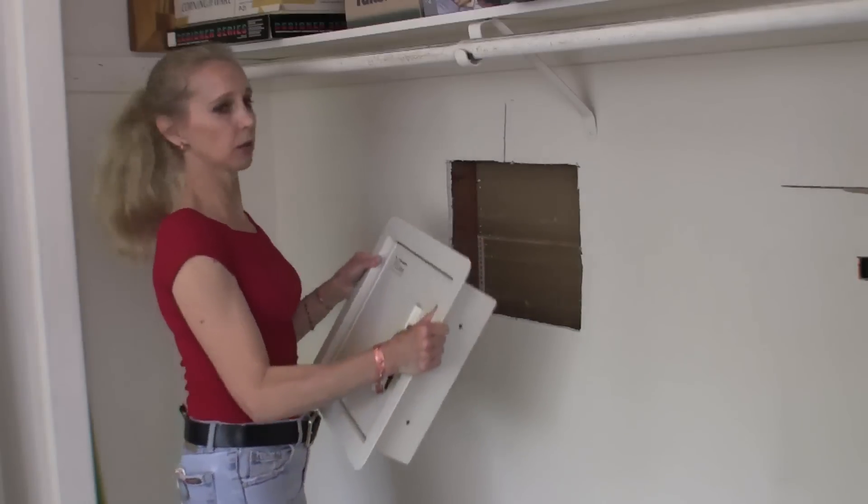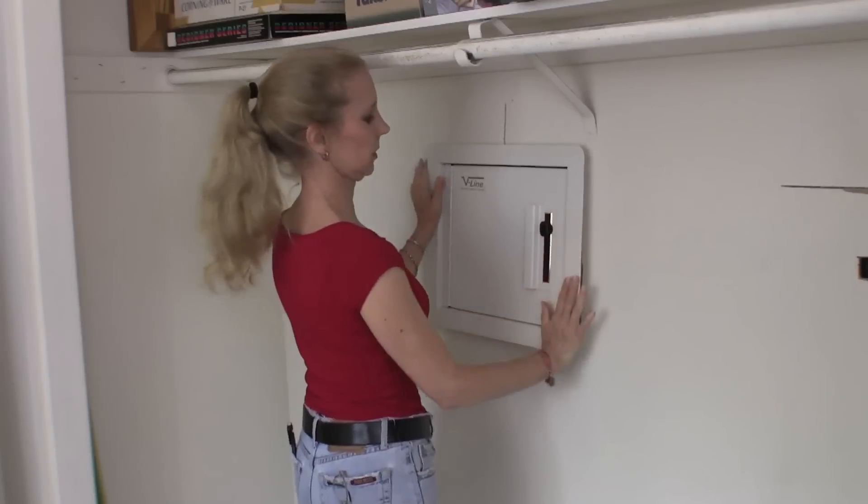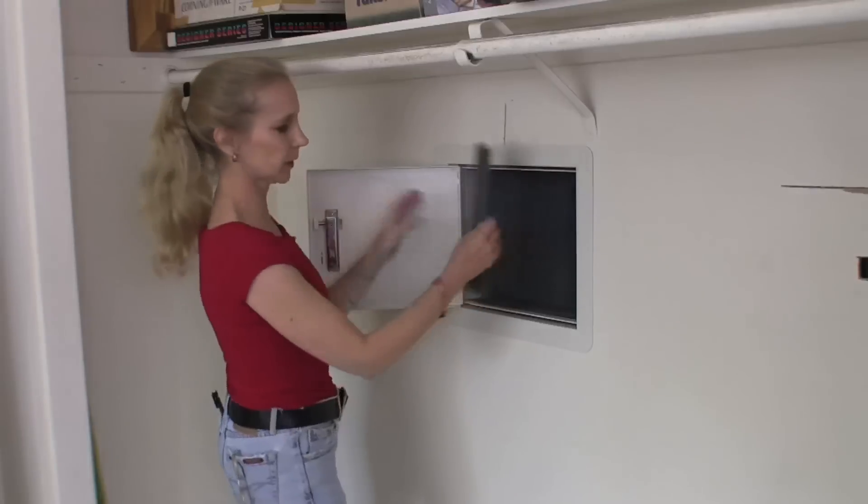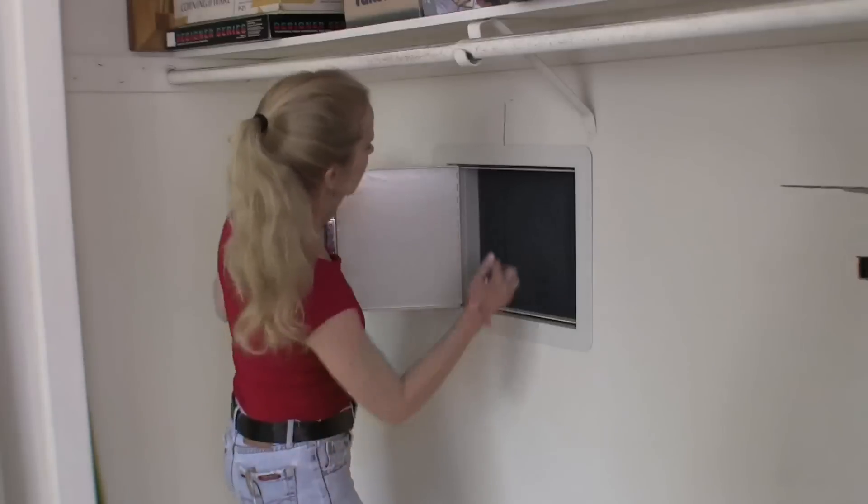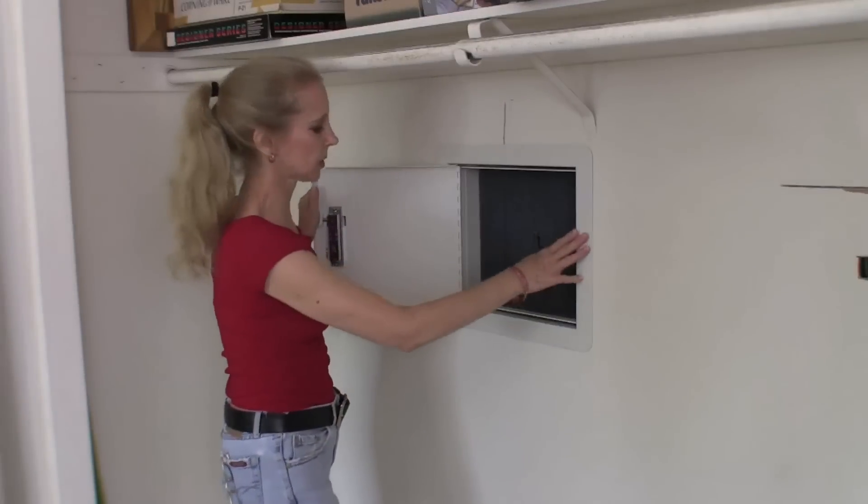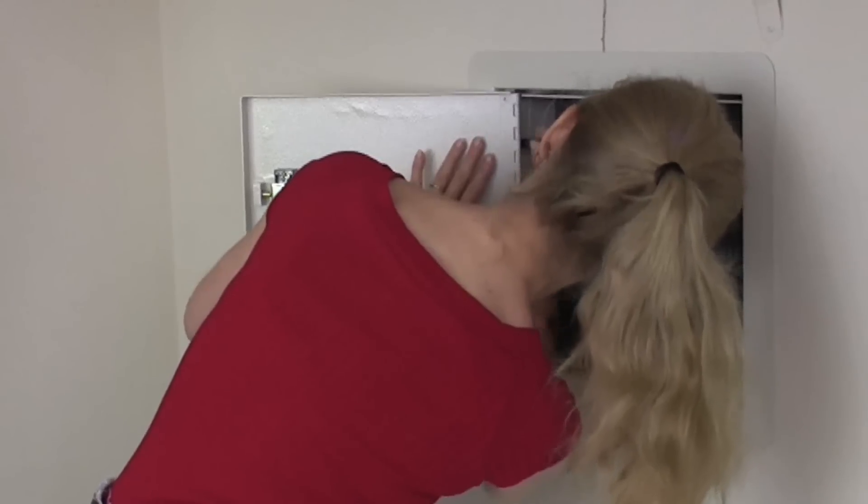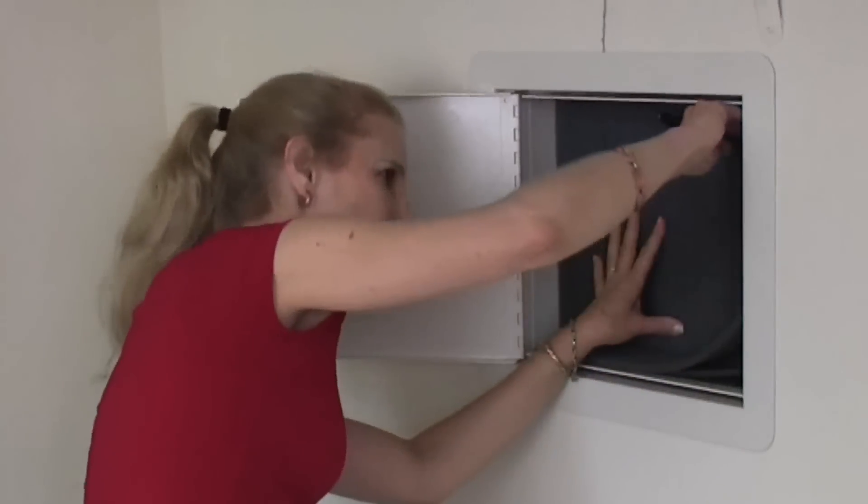Now we're ready to put our vault in the wall. So we just slide it in our hole and then open it up. We've got our felt sides off. And we're going to mark our holes so we can do some starter holes in the studs. There's two holes on each side.